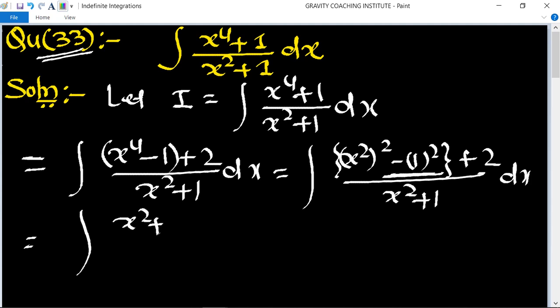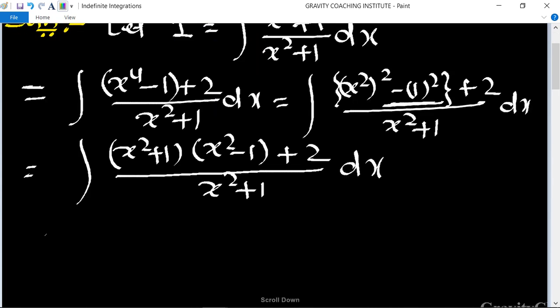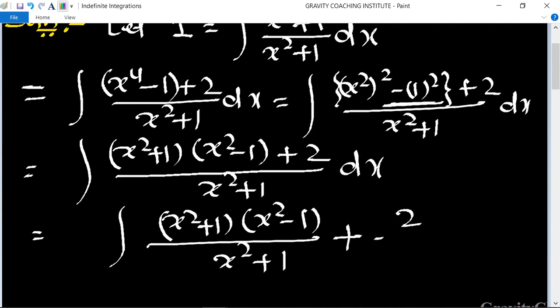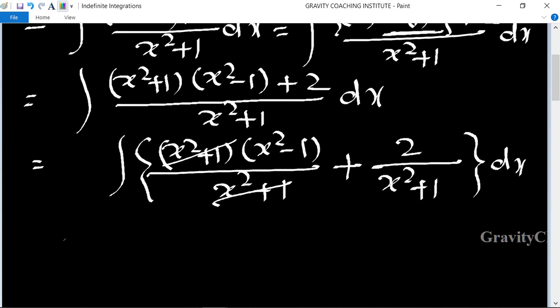x square plus 1 times x square minus 1 plus 2 upon x square plus 1 dx. Now x square plus 1 cancels out. We can separate the integration and integrate. The 2 is a constant so it comes outside as dx upon x square plus 1.